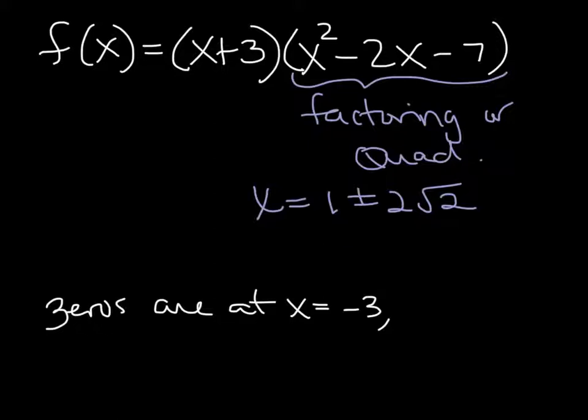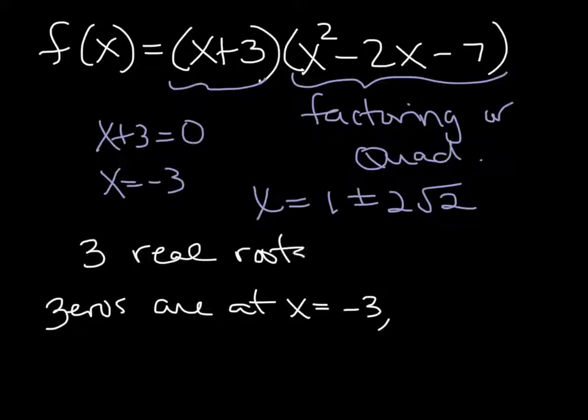So these right here, so 1, 0 comes from setting this equal to 0. If I set x plus 3 equal to 0, I get my x equals negative 3. So that's one possible, that's one actual 0, and I get two more from the quadratic formula. So I do have three, in this case, I have three real roots.